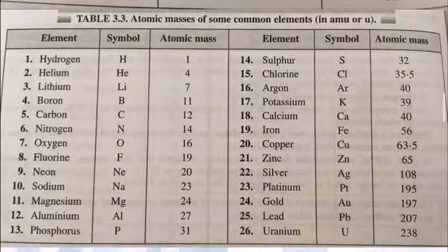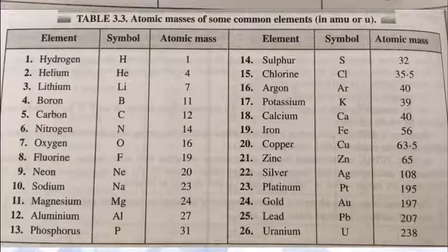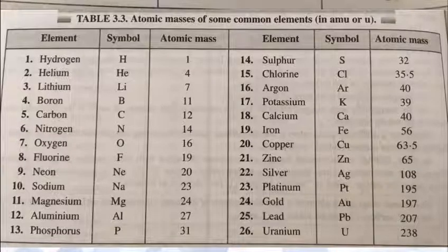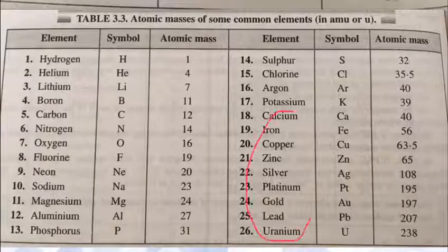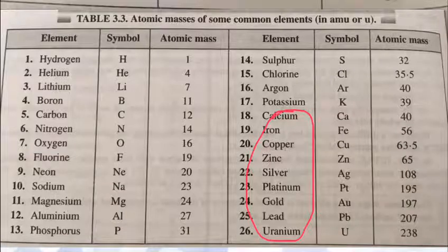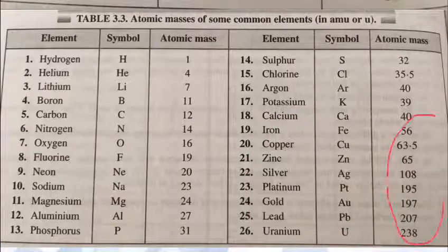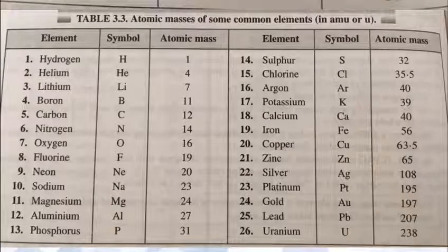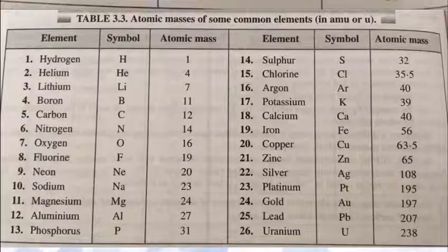This chart shows the elements with symbol and atomic mass, a few of them which you do not know and I want to add: iron, copper, zinc, silver, platinum, gold, lead, and uranium and their masses and their symbols are given here. So you have to learn them if you want, but it is important.